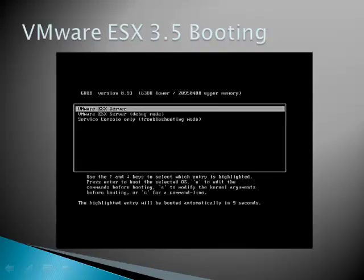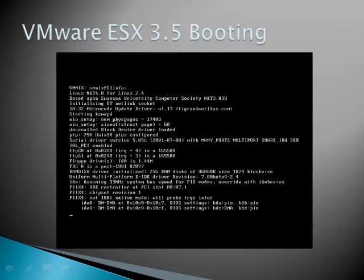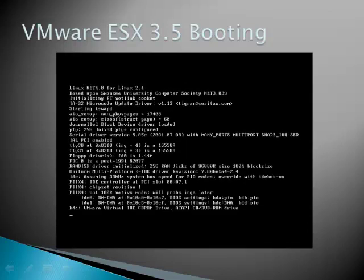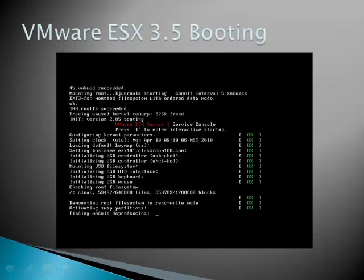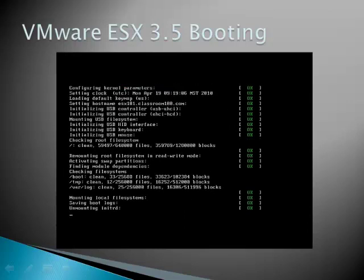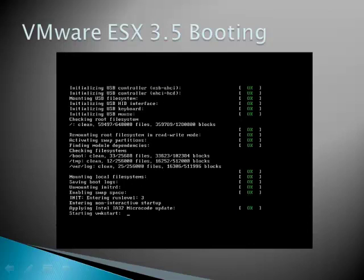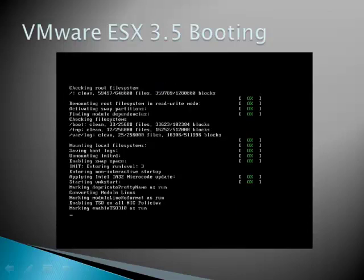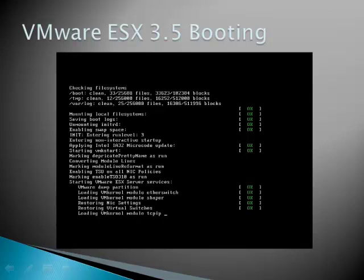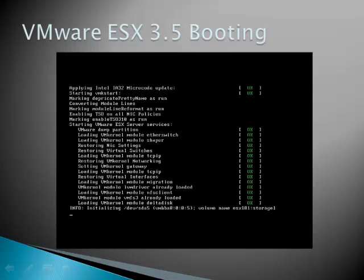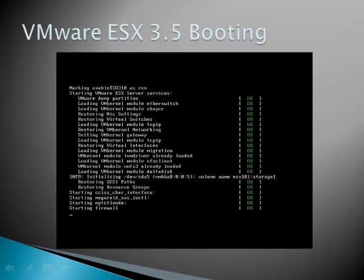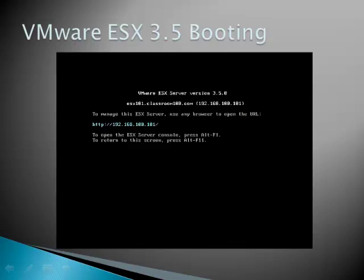Let's look at an example of an older version of ESX Server booting and take note of when various services start. Initially all you see is Red Hat Linux — still Red Hat. Pretty soon you're going to see some VM kernel services start; that is the beginning of virtualization under ESX 3.5 and previous. There we go — there is virtualization starting right now. That is the splash screen for a fully booted ESX 3.5 server. As you saw, we basically loaded Red Hat and then started the hypervisor.